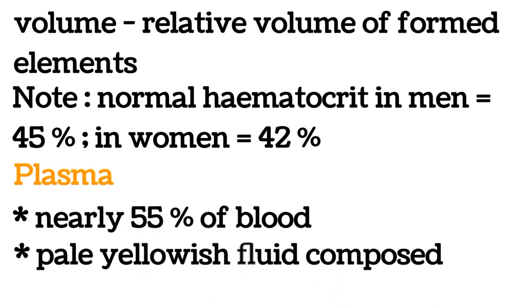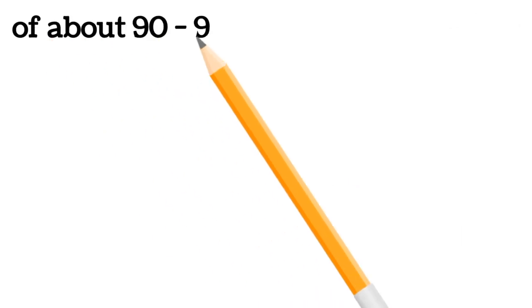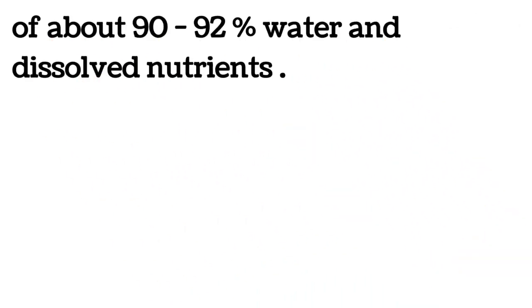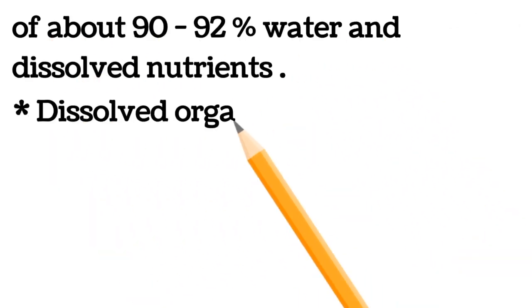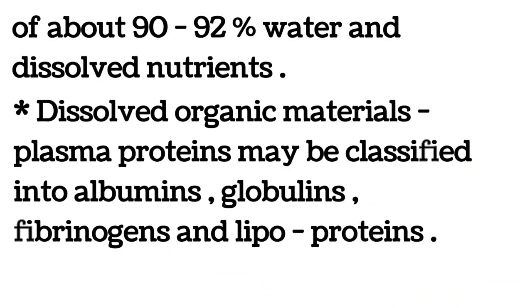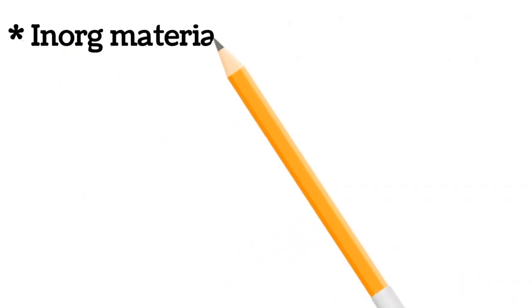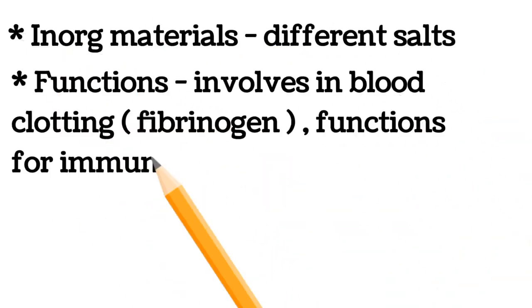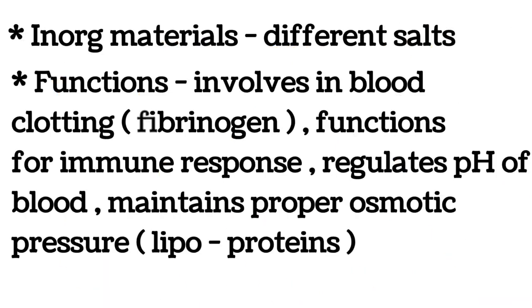Plasma is composed of about 90-92% water and dissolved nutrients, dissolved organic materials. Plasma proteins may be classified into albumins, globulins, fibrinogens, and lipoproteins. Inorganic materials include different salts. Functions involve blood clotting (fibrinogen), immune response, regulating pH, maintaining proper osmotic pressure (lipoproteins).